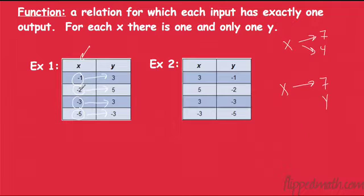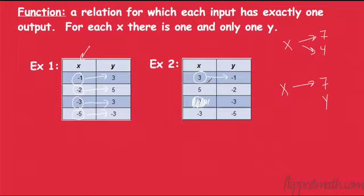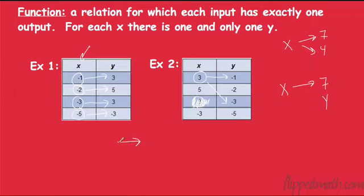This becomes clearer when you look at a mapping diagram. If you have the same x going to negative 1 and negative 3, then when you put that x in, it goes to two different outputs. Is it possible for a number to function and go to two different outputs? It's not possible — it can only go to one output. That's the function. For everything you put in, every x you put in, you can only get one output back.